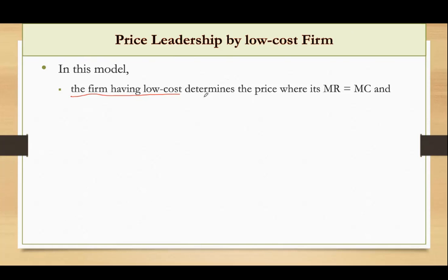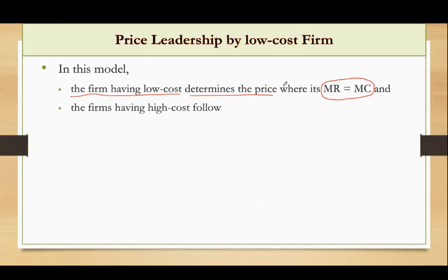The price leader determines the price where it can maximize its profit. This is the profit maximizing condition: MR equals MC. The firms having high cost follow the price of the products — they are the price followers.